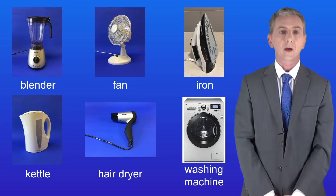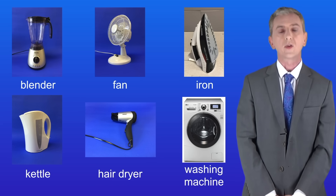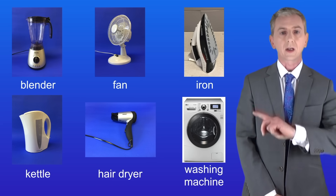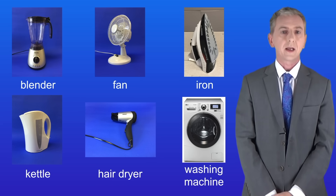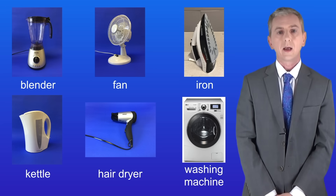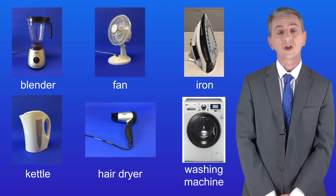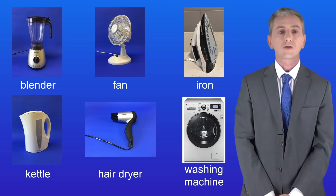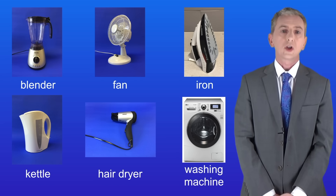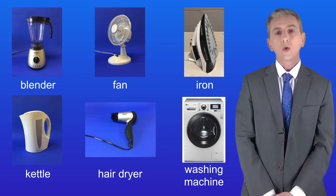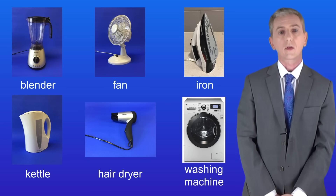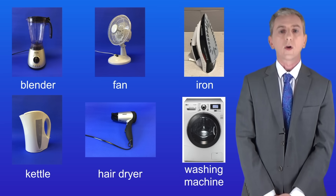There are hundreds of different appliances that we find in homes and I'm showing you a small selection here. We've got a blender, a fan, an iron, a kettle, a hairdryer, and a washing machine. All of these appliances transfer electrical energy into other forms of energy and you need to be able to describe these transfers. In your exams you only need to identify transfers to kinetic energy and thermal energy, so we're only going to focus on those.